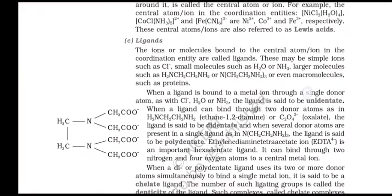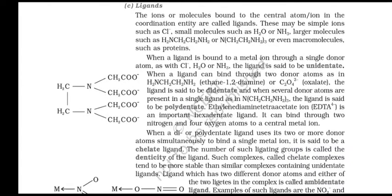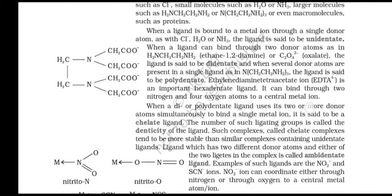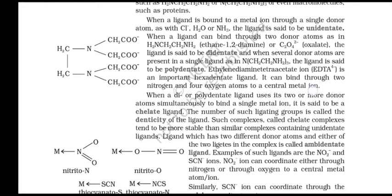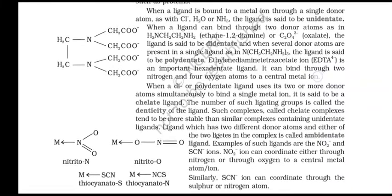Ligands: The ions or molecules bound to the central atom in a coordination entity are called ligands. These may be simple ions such as Cl-, or small molecules such as H2O or NH3, or even macromolecules such as proteins. When a ligand is bound to a metal ion through a single donor atom, as with CN-, H2O, or NH3, the ligand is known as unidentate. When a ligand can bind through two donor atoms, as in H2N-CH2-CH2-NH2 (ethane-1,2-diamine) or C2O42- (oxalate), the ligand is said to be didentate. When several donor atoms are present in a single ligand, the ligand is said to be polydentate.